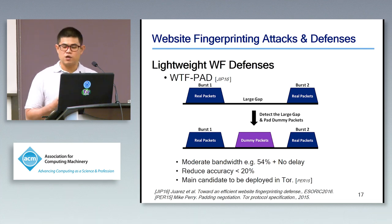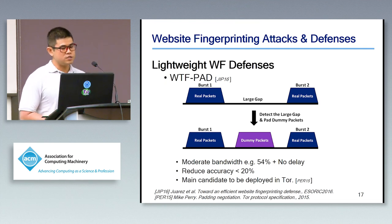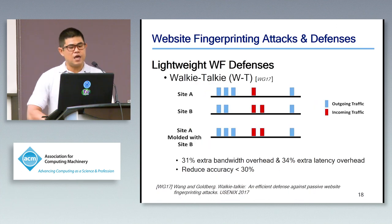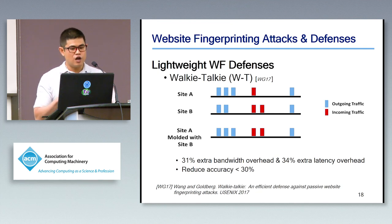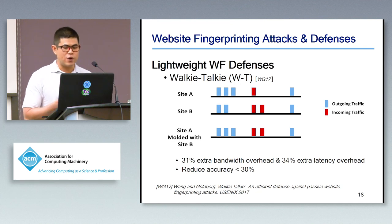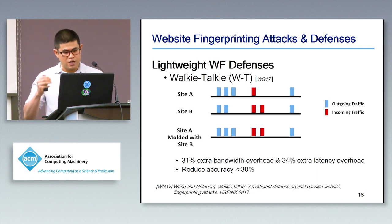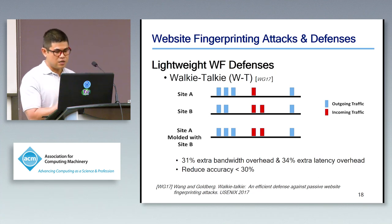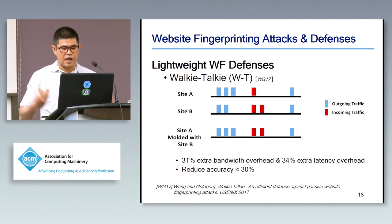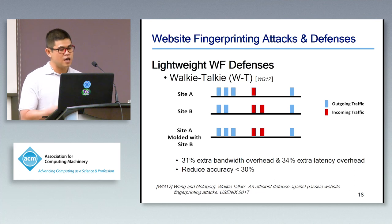WTF-PAD can effectively reduce attack accuracy to less than 20%, and importantly, Tor developers have shown interest in deploying it. The second defense is Walkie-Talkie by Wang and Goldberg. The concept is to add dummy packets so that two or more different websites look exactly the same in terms of their packet sequence. When the classifier tries to predict the packet sequence, there is uncertainty about whether packets came from website A or website B, ultimately confusing the classifier. This defense requires low bandwidth and low latency overhead and can effectively reduce attack accuracy to less than 30%.